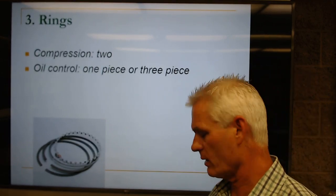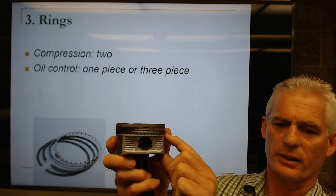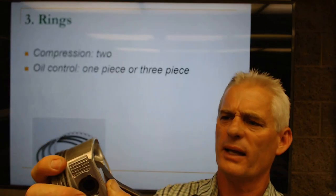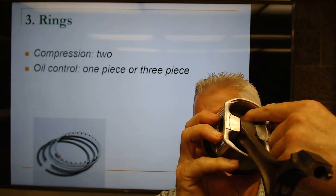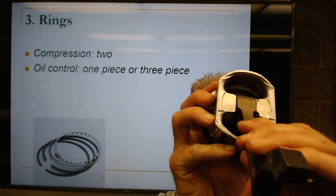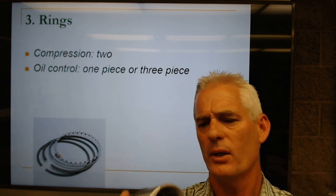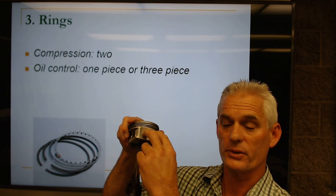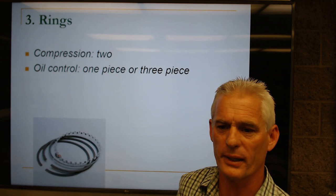Oil goes through the expander of the oil control ring and pistons have oil holes — you can see the staining there. There are two holes where oil falls through the skirt, drops down through the center of the piston, and goes back into the oil pan.